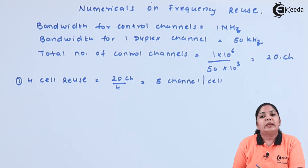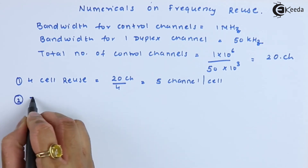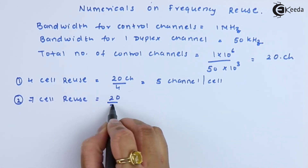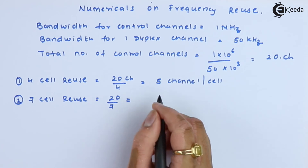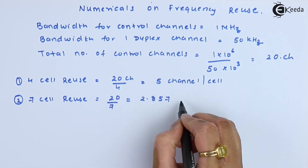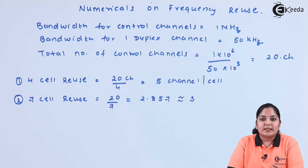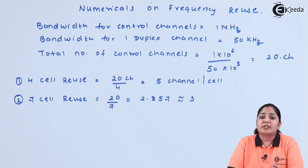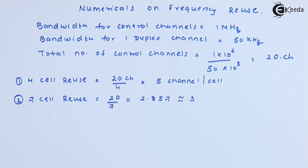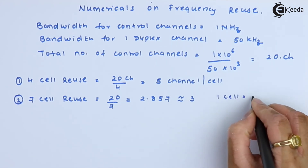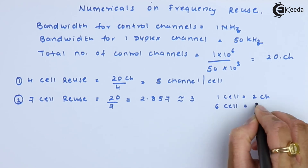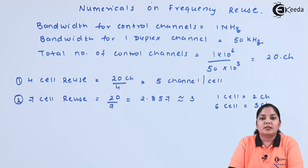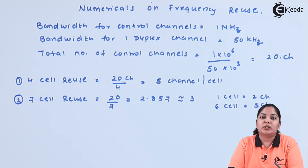Now we will see 7 cell reuse. For 7 cell reuse, the answer we get is 2.857. We know that channels cannot be a decimal number. Hence the distribution is as follows: for 1 cell we give 2 channels and for the remaining 6 cells we give 3 channels, which in total gives us 21 control channels.